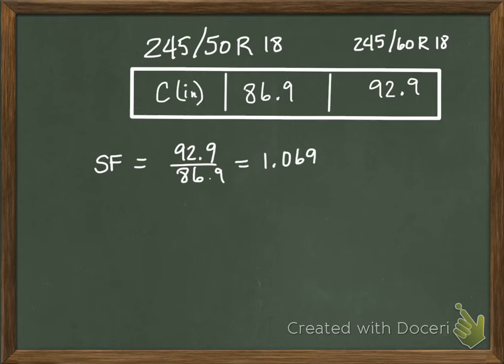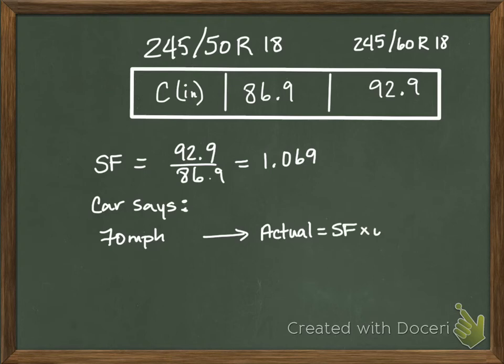That means that if my car tells me I'm driving down the road, I think I'm going 70, so this is what the car says. Car says 70 miles an hour. What the police officer is going to tell me when he pulls me over is the scale factor times that. So actual equals your scale factor times your original, or times what you're seeing.